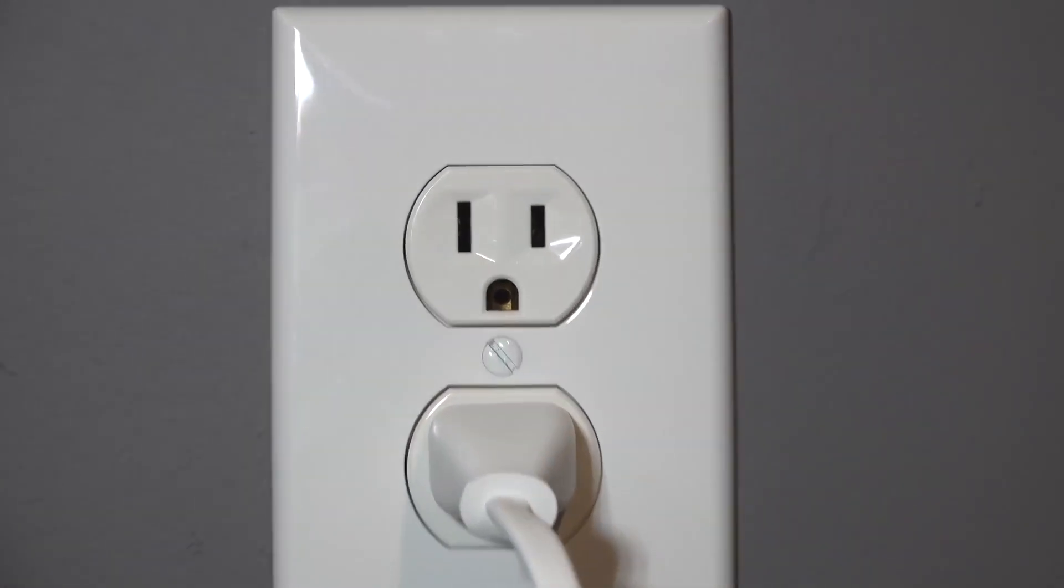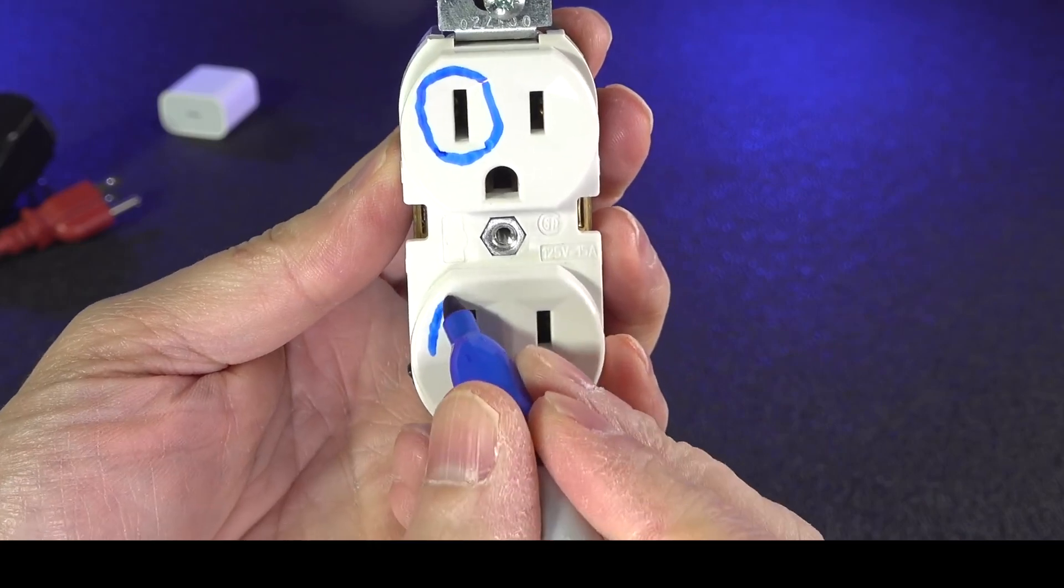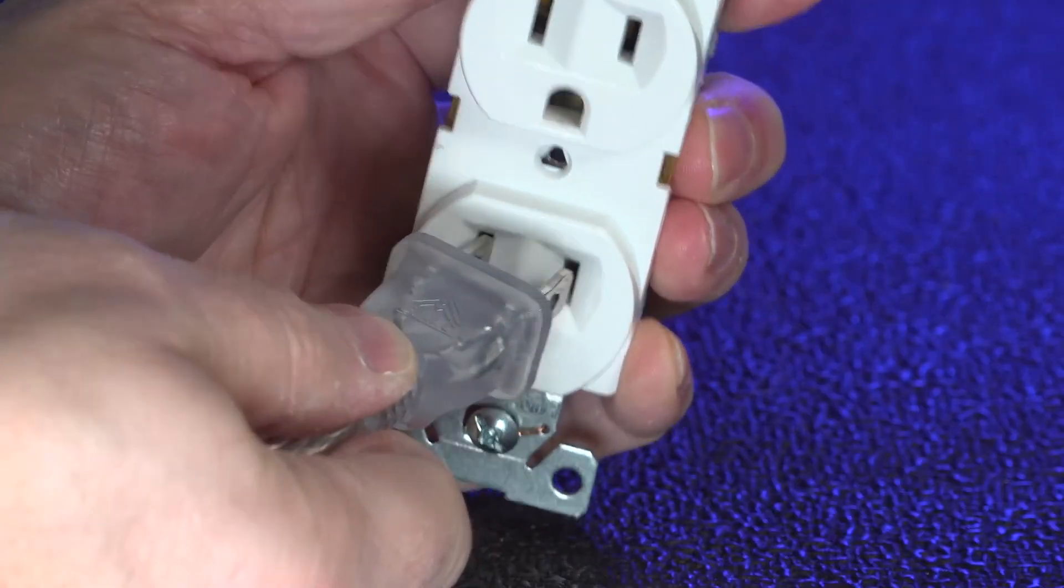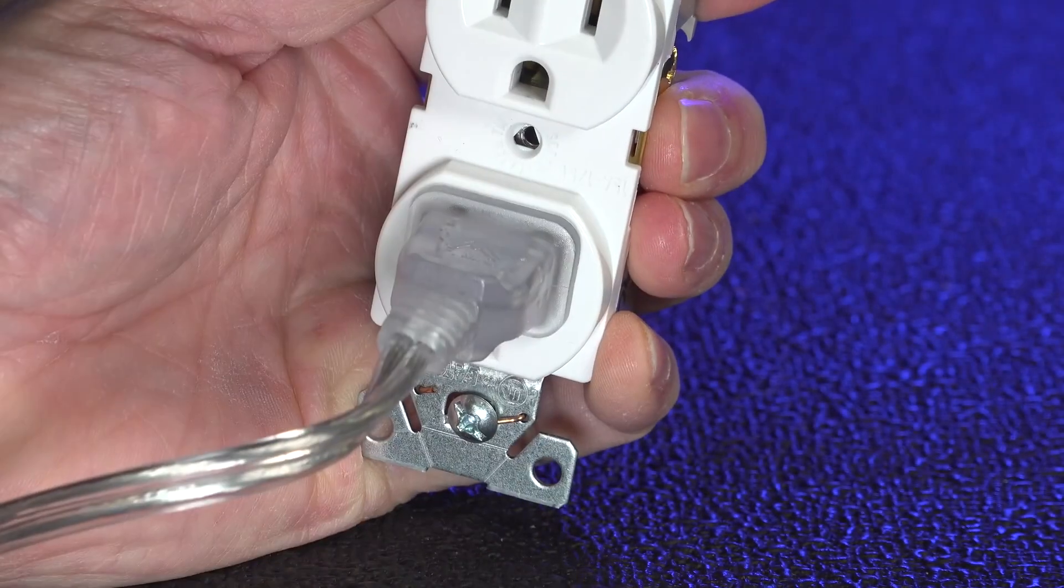If you've ever looked at one of your outlets, you've probably noticed that one of the slots is larger than the other. But do you know the reason why? You've certainly tried to plug something in and the plug just wouldn't go, but if you flipped it around, it would go into the outlet just fine.